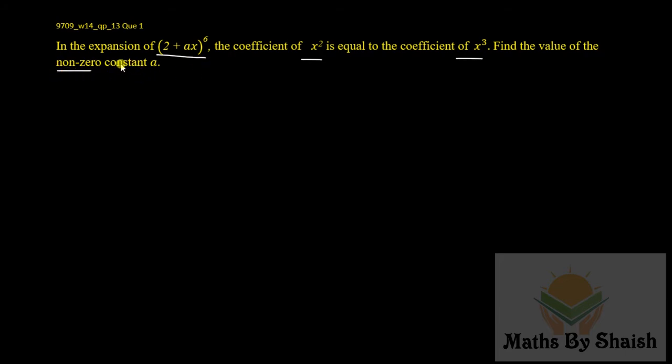It means a is given that is not a zero value. For the coefficient, we should always start with the general term. If (a + b)^n is there, in the expansion of this, any general (r+1)th term is given by nCr × a^(n-r) × b^r.